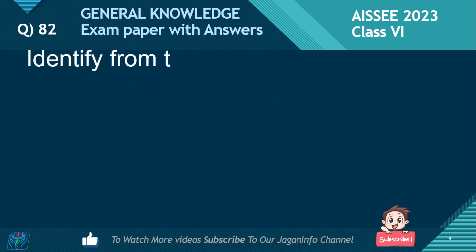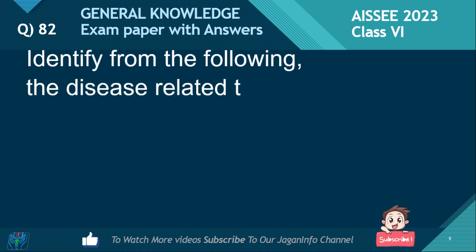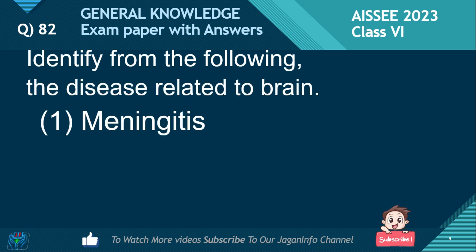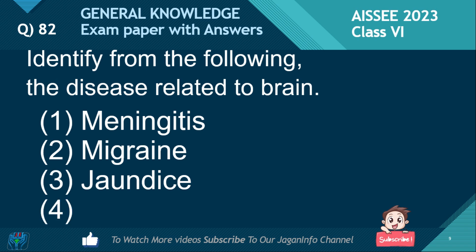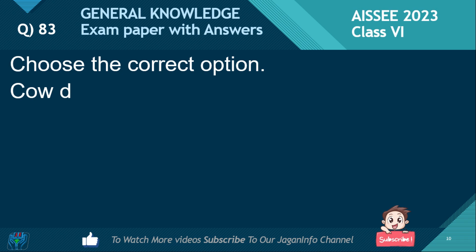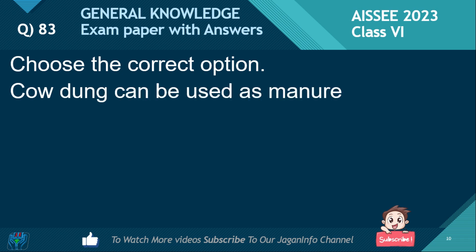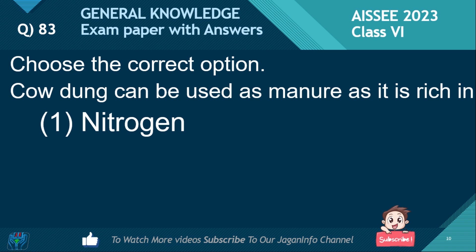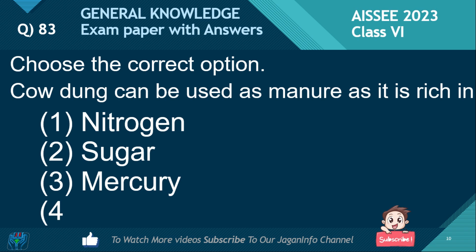Identify from the following the disease related to the brain. Options: Meningitis, Migraine, Jaundice, Diabetes. The answer is Meningitis. Next: Cow dung can be used as manure as it is rich in — Nitrogen, Sugar, Mercury, or Calcium. The right answer is Nitrogen.